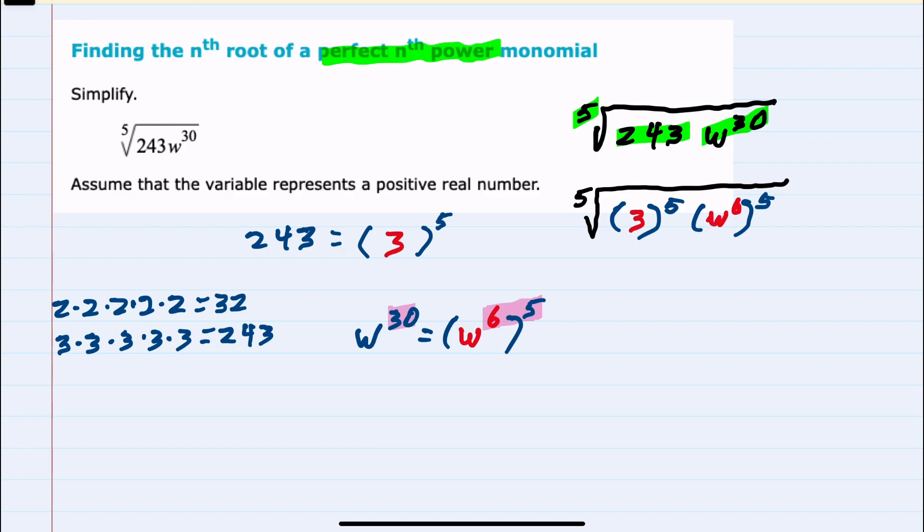From here we can evaluate the fifth root. Removing the root altogether would cancel each one of these fifth powers underneath the root, leaving us with just the 3 from the first part of this expression and the w to the sixth from the second part.